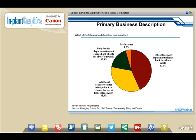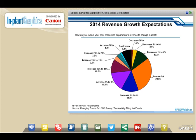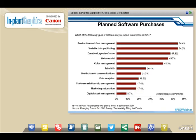We asked how much they expected print production revenue to change in 2014 — the majority were either going to be flat or increasing. When we asked what they were planning on buying relative to cross-media, some were focused on workflow software, followed closely by variable data publishing, creative layout software, and web-to-print. There's clearly an interest in moving into more channels.